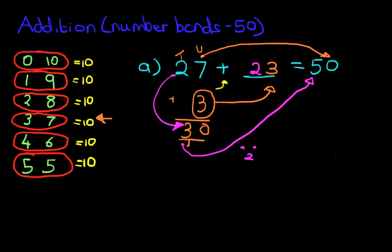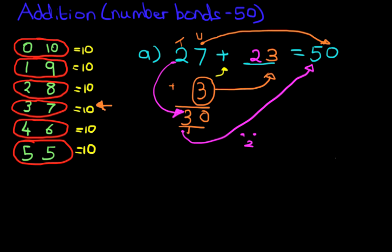Now, did you see how we worked through that? We started at the units, made the 7 become a 0, and then we worked on the tens, which was no longer 2, it was a 3, and then we made it a 5. If you didn't get that, don't worry. We're going to work on a second example.